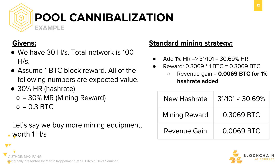Let's first establish some assumptions. Let's say that we have 30 hashes per second of power in your pool, and the total network has 100 hashes per second. We see that we have 30% of the network hashrate. On top of that, there is a current block reward of 1 Bitcoin per block. These numbers are for simplicity's sake to set up the stage for the pool cannibalization analysis, and not at all representative of real-world conditions.